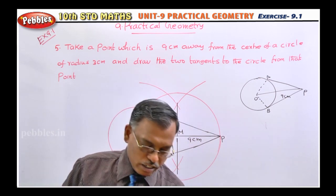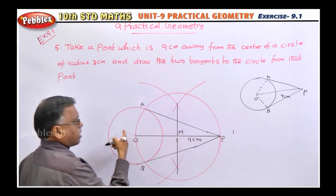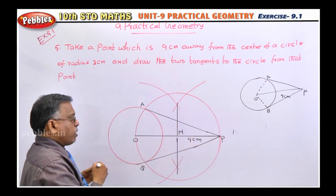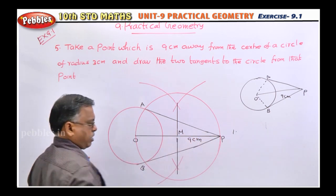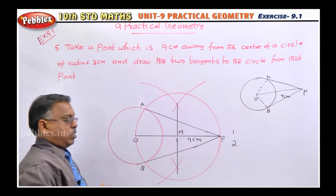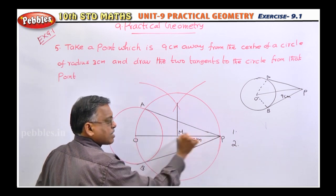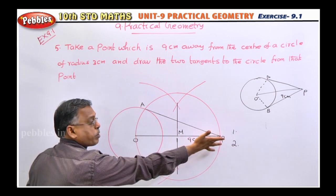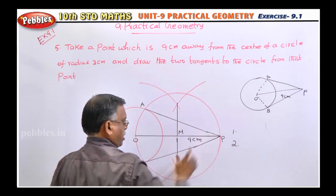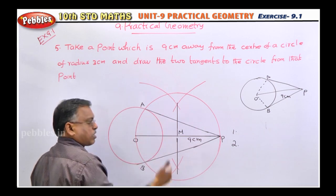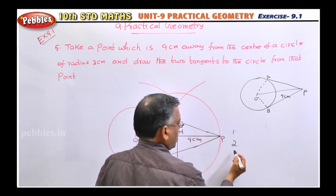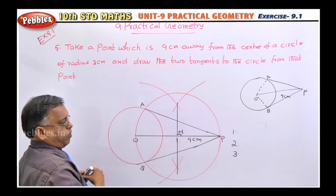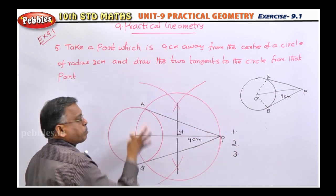Now listen carefully to the steps of construction. First step: draw a circle of radius 3 centimeters. Second step: mark a point P from the center O of the circle such that OP equals 9 centimeters. Third step: for OP, construct a perpendicular bisector — taking O as center, with more than half of OP as radius, draw arcs on both sides. Similarly, with P as center and same length, draw arcs. They will intersect; join those points. That line is the perpendicular bisector, cutting OP at M, at 90 degrees. Fourth step: with M as center and OM as radius, draw another circle which cuts the previous circle at A and B.